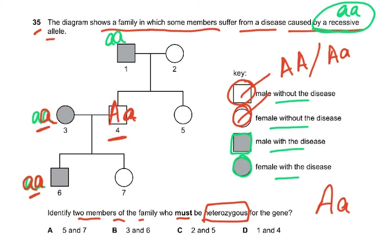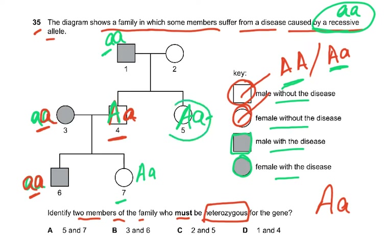Person 5 is not a sufferer so must be Aa — one small 'a' came from parent 1. Person 7 is also not a sufferer: the big A came from one parent and the small 'a' from the other, making person 7 also Aa. So two members who must be heterozygous are persons 5 and 7, and the answer is A.